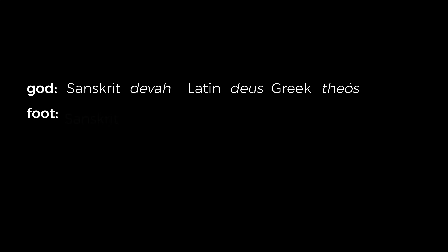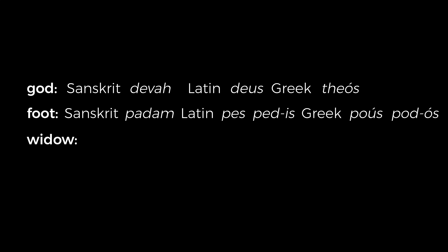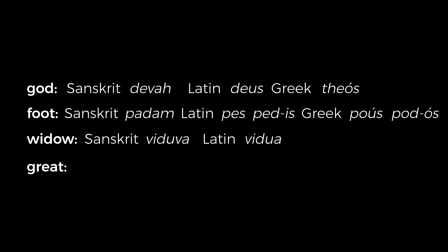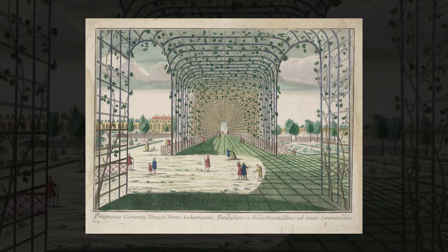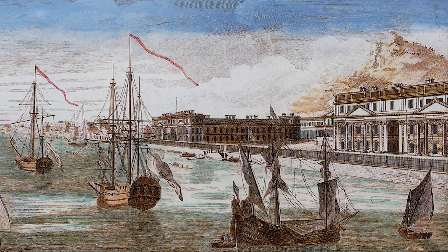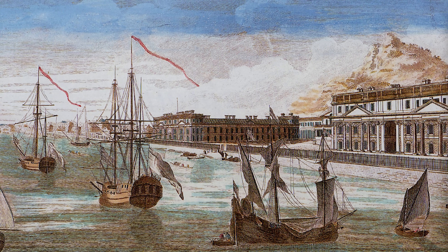Cœurdoux compared words across Sanskrit, Latin, and Greek — for example, God: Sanskrit Deva, Latin Deus, Greek Theos; Foot: Sanskrit Padam, Latin Pedis, Greek Podos; Great: Sanskrit Maha, Greek Megas. Note that Deus and Theos are false cognates; the correct cognate in Greek for Deus would be Zeus. He also suggested that Slavic languages are related to this family. Cœurdoux's account was sadly only published in 1808, and otherwise might have had a much larger impact had it been published at the time of writing.